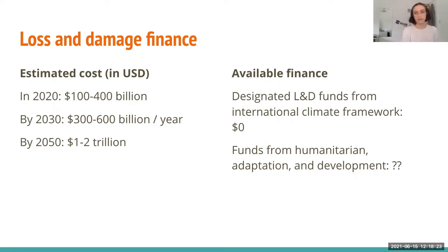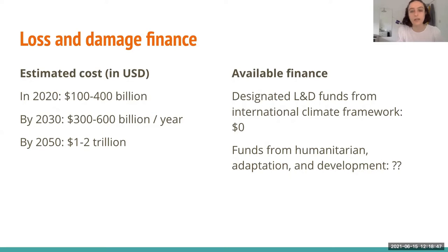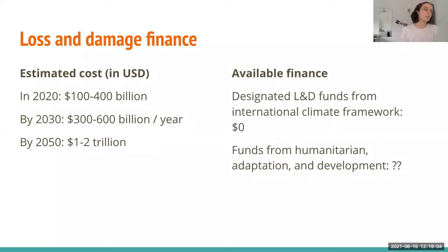That being said, some funding for adaptation and the humanitarian sector does go towards loss and damage on the ground. But the point is that while loss and damage is the third pillar of the Paris Agreement, it's not respected as such with regard to how developed countries are providing climate finance. We've seen the goal for governments to provide 100 billion dollars per year by 2020, and countries have not really met this goal. Basically, we've been pushing for countries to establish a new stream of finance for loss and damage.